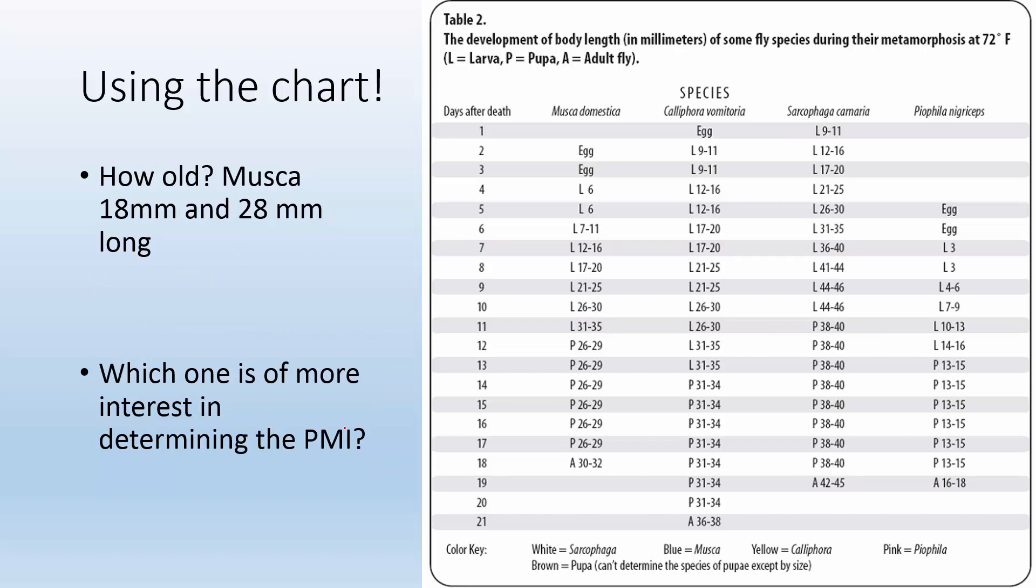What about this question? How old? We have musca that are 18 millimeters and 28 millimeters. Well let's figure out the 18 millimeter one first. So musca again, 18 millimeters would fall right in this range, so that'd be about eight days. All right, what about the 28 millimeter one? Well 28 millimeters would fall right in here and that would be about 10 days. Now if we collected both these maggots off the same sample, which one is going to be of more interest in determining the post-mortem interval? Well if we're trying to figure out how long the body has been there for, we want the oldest maggot because it was there the earliest.